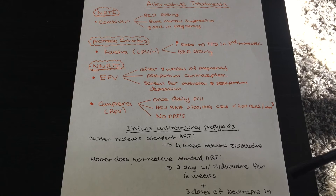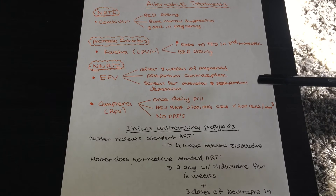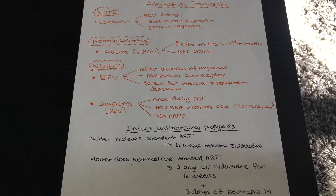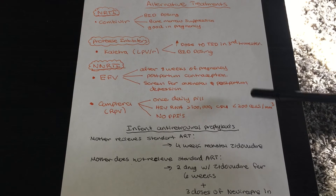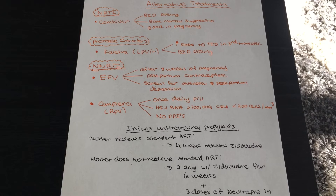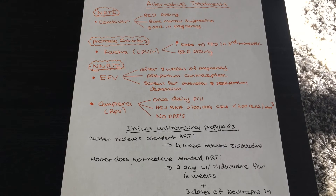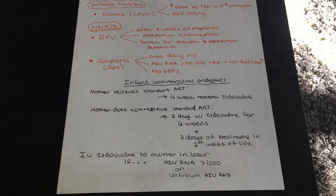Under NNRTIs, the two alternative drugs are efavirenz and Complera. With efavirenz, be careful of teratogenicity — a woman can take it starting eight weeks after becoming pregnant, and postpartum she should be on contraception. Because efavirenz is known to precipitate psychiatric illnesses, screen for antenatal and postpartum depression. Complera is a once-daily pill containing rilpivirine; avoid PPIs or antacids with rilpivirine, and ensure HIV RNA is not greater than 100,000 copies/mL and CD4 is not less than 200 cells.